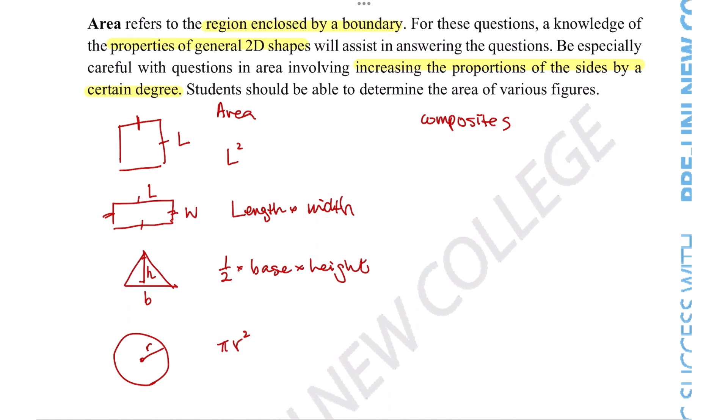One other thing that's very, very common for the type of question for area is that you'll have any one of these basic shapes and the question will add some sort of boundary or increase the proportions of the sides. So very common ones are things like adding a path around the shape or adding a frame, like a picture frame around the shape that basically adds dimension to the length or width or something to the shape.